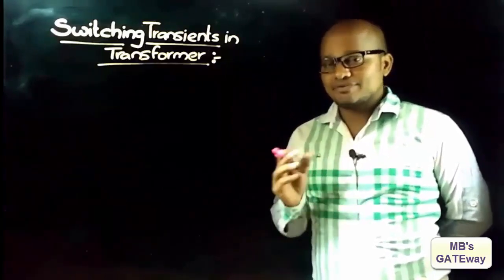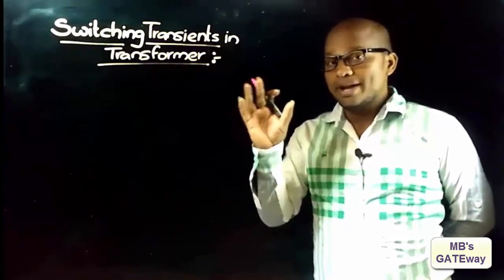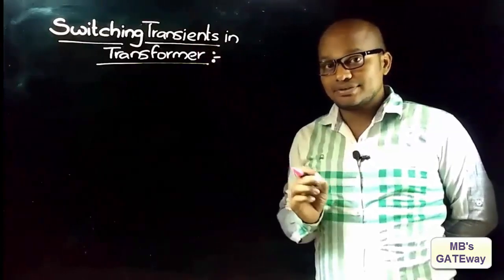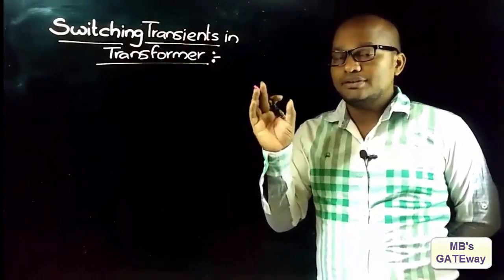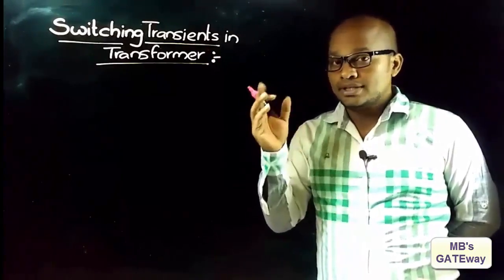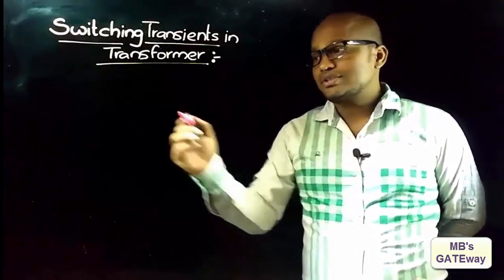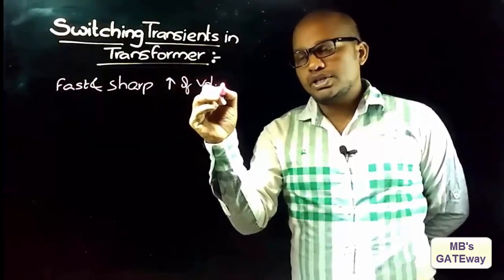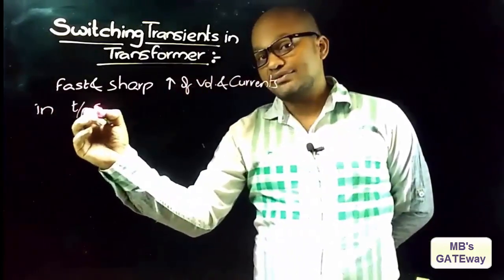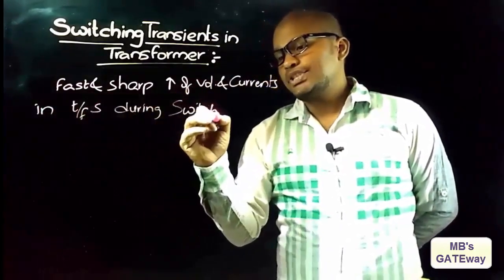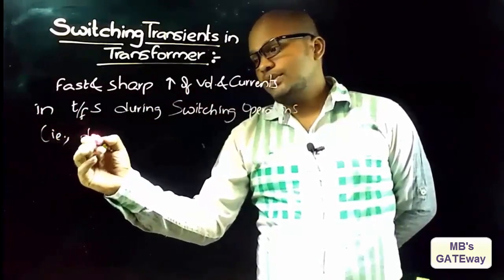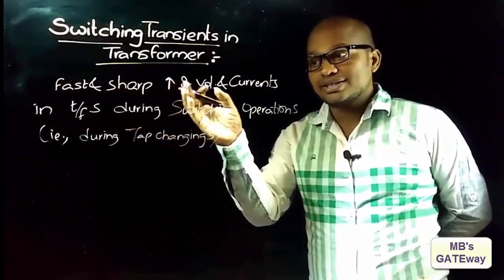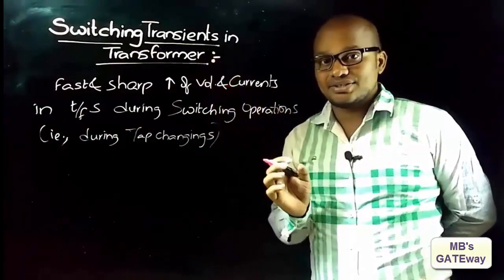Let's discuss the switching transitions in transformers. From this you will know why a transformer will draw more magnetizing current while performing switching operations, and what portion of the transformer is affected. Switching transitions are the fast and sharp increase of voltages and currents in transformers during switching operations — that is, during tap changing — and those are called switching transitions.